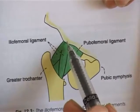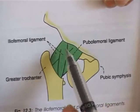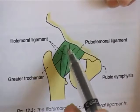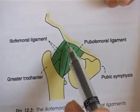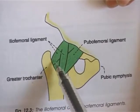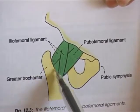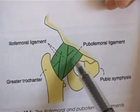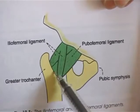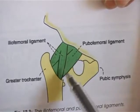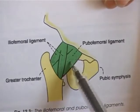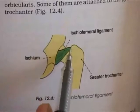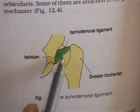The anterior inferior iliac spine, in its lower part, gives attachment to a very strong ligament: the iliofemoral ligament. It is inverted Y-shaped. The apex is attached to the anterior inferior iliac spine and by its two ends it is attached to the two parts of the anterior intertrochanteric line of the femur. Also seen is the pubofemoral ligament, going medially, arising from the body of the pubis to the femur. Also in relation to the hip joint is the ischiofemoral ligament, from the body of the ischium to the acetabulum.